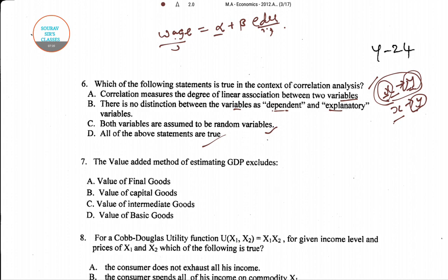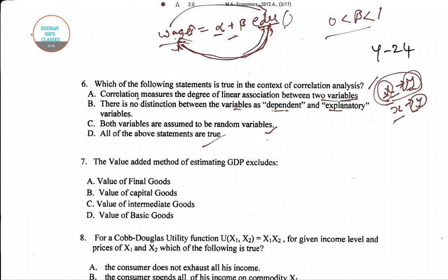From this we can confirm all options are true: first, correlation measures the degree of linear association — education determines wage linearly with the correlation value between zero and one. Second, there is no distinction between dependent and explanatory variables; either x or y can be taken as either. Third, both variables are assumed to be random variables as they are both varying in nature.